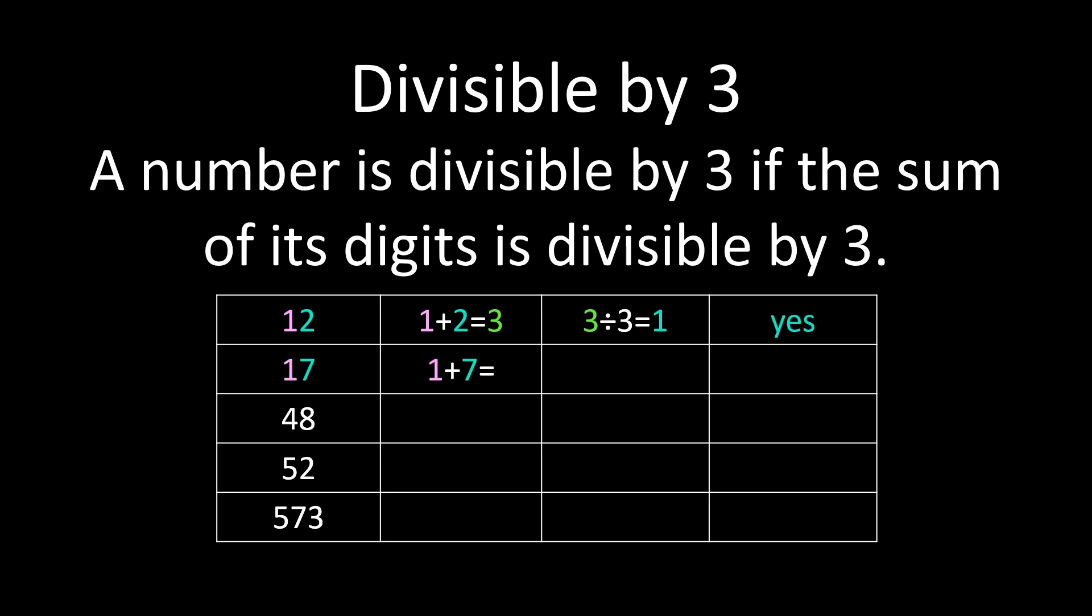If we consider 17, I'm going to add the digits, 1 plus 7. 1 plus 7 is 8. When I divide 8 by 3, I don't get a whole number answer because I get 2.67. Because I don't get the whole number answer, 17 is not divisible by 3.